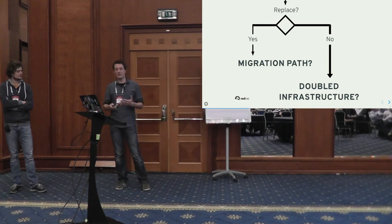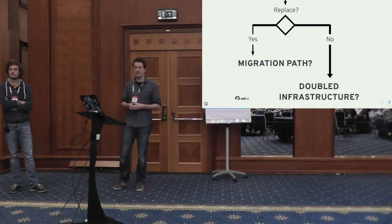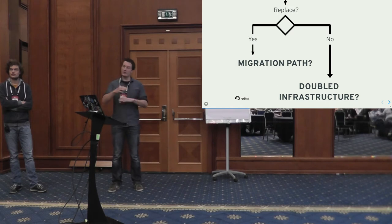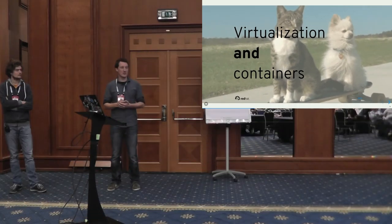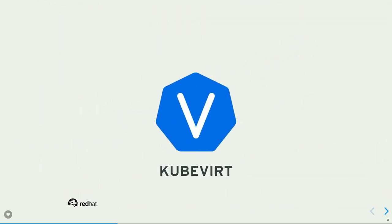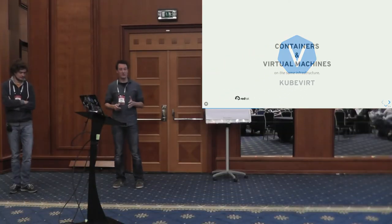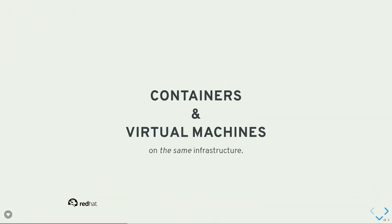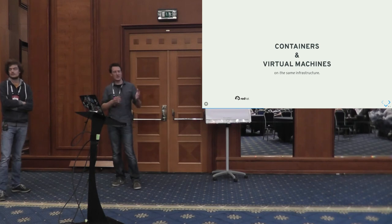In the end, you need both virtualization and containers, probably for quite a while. And that is where KubeVirt comes in. KubeVirt is exactly about running containers and virtual machines on the very same infrastructure, reducing the burden of maintaining two separate infrastructure sets. We even give the user the ability to manage them on that same infrastructure with the same API.